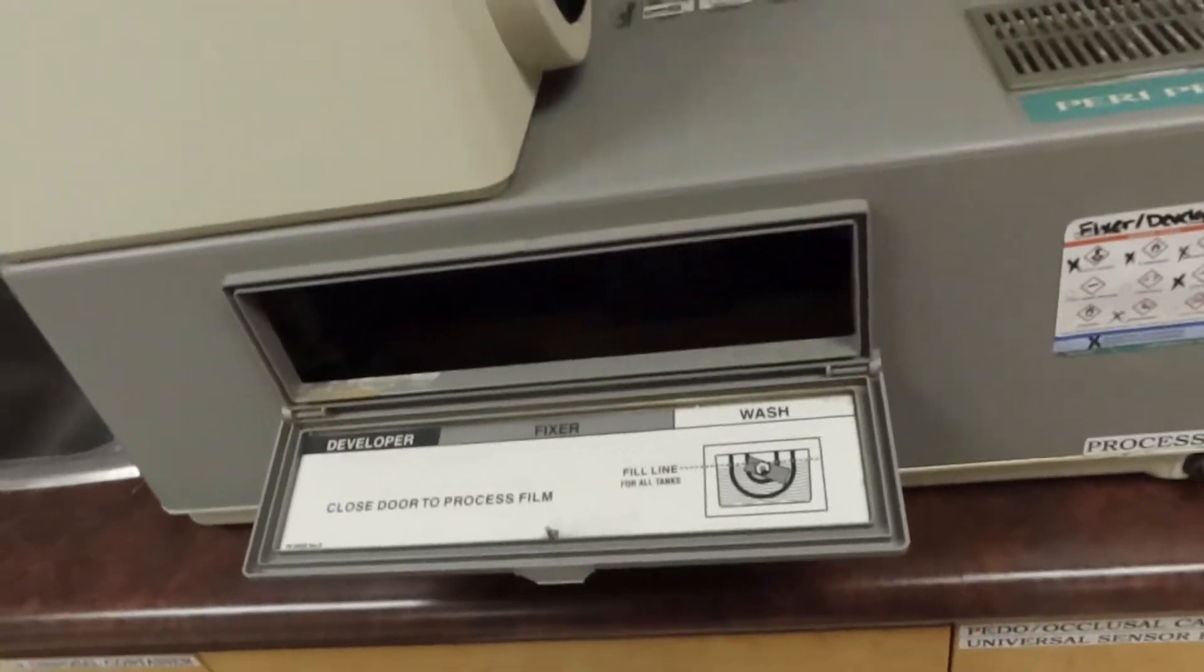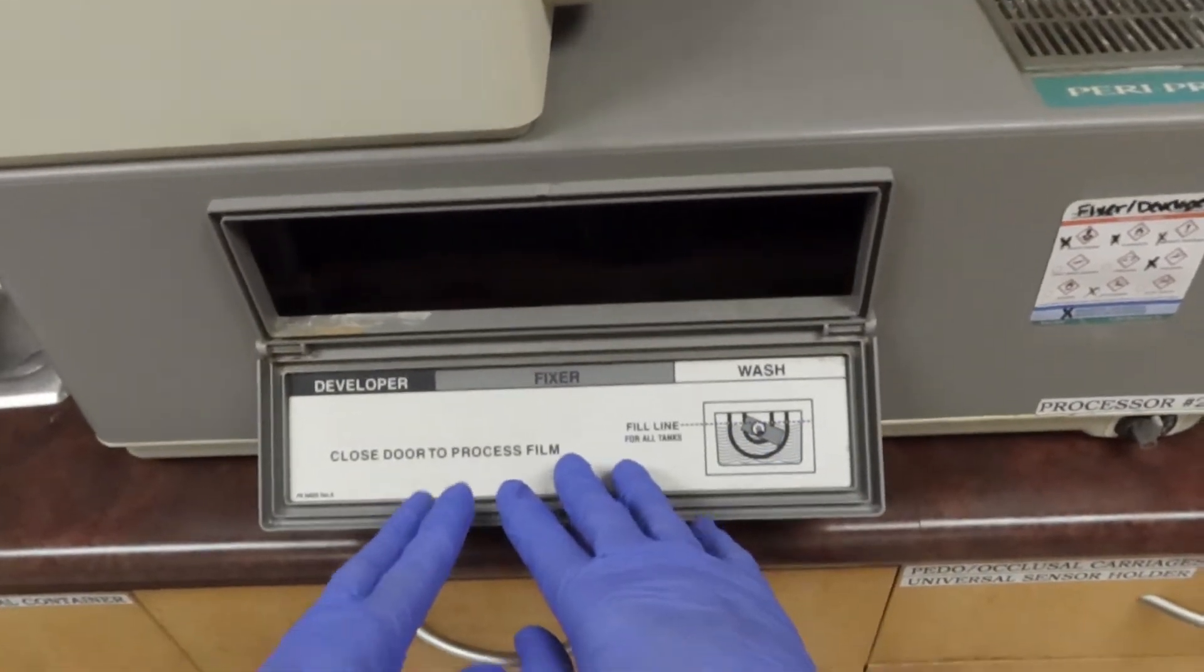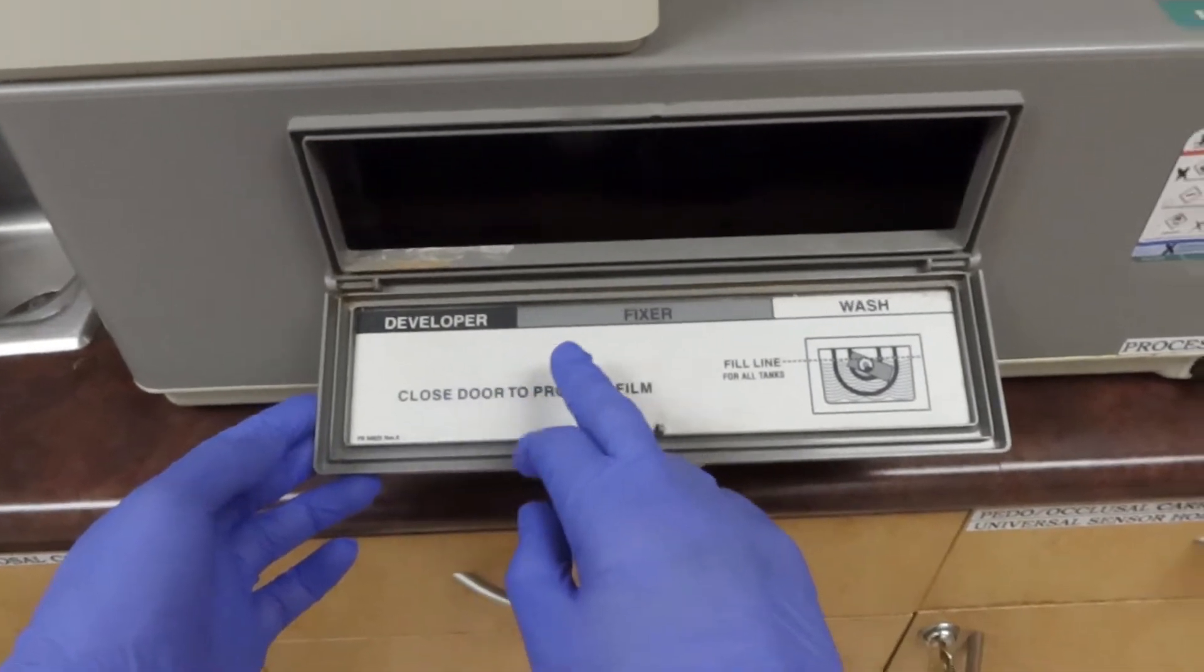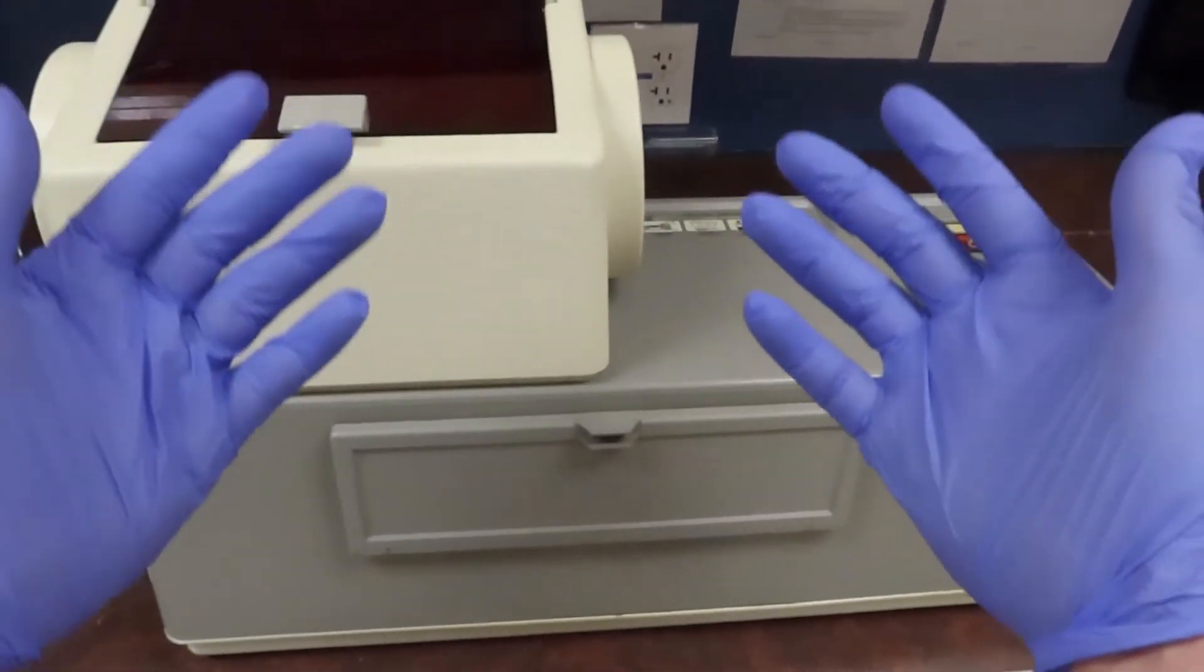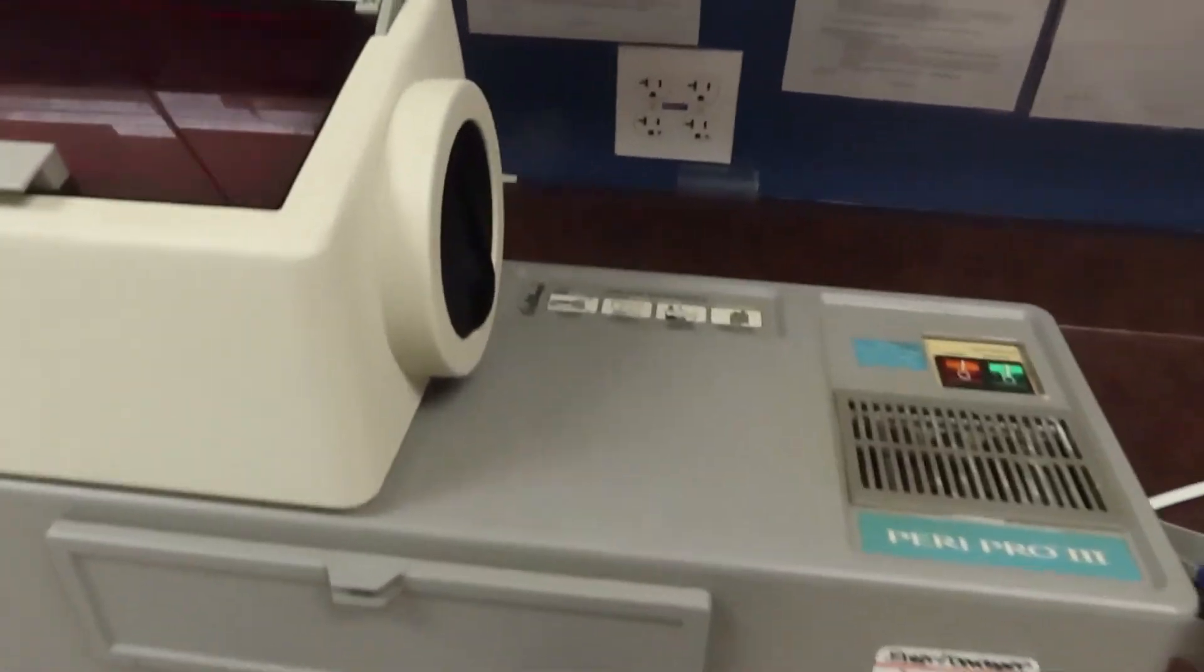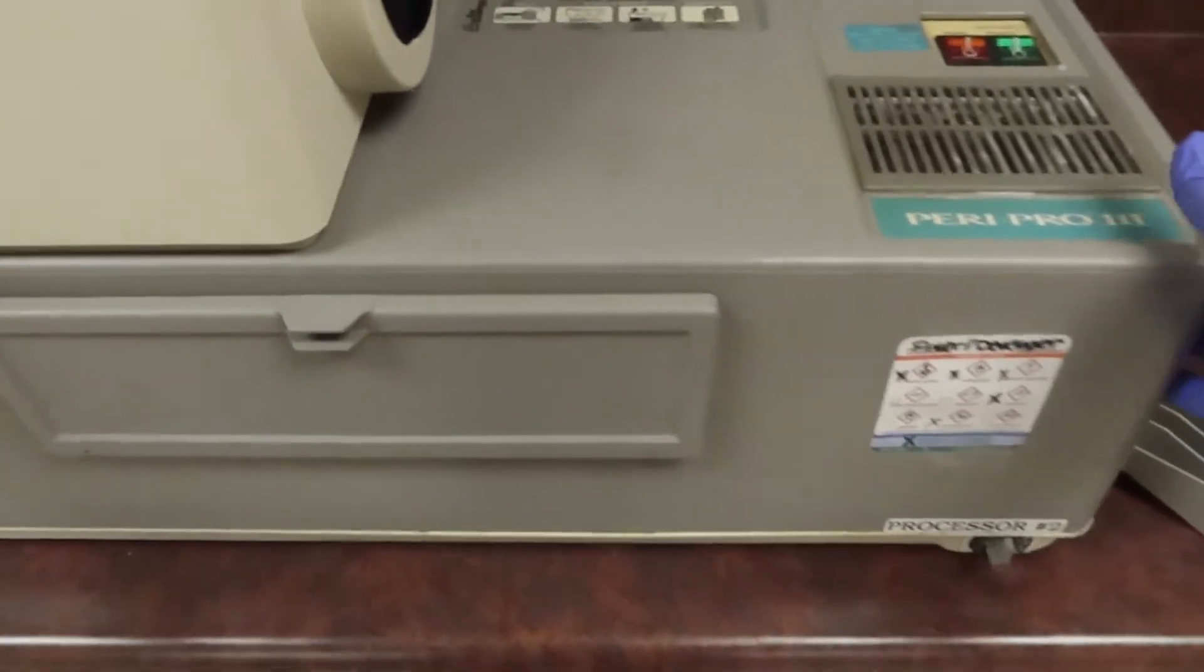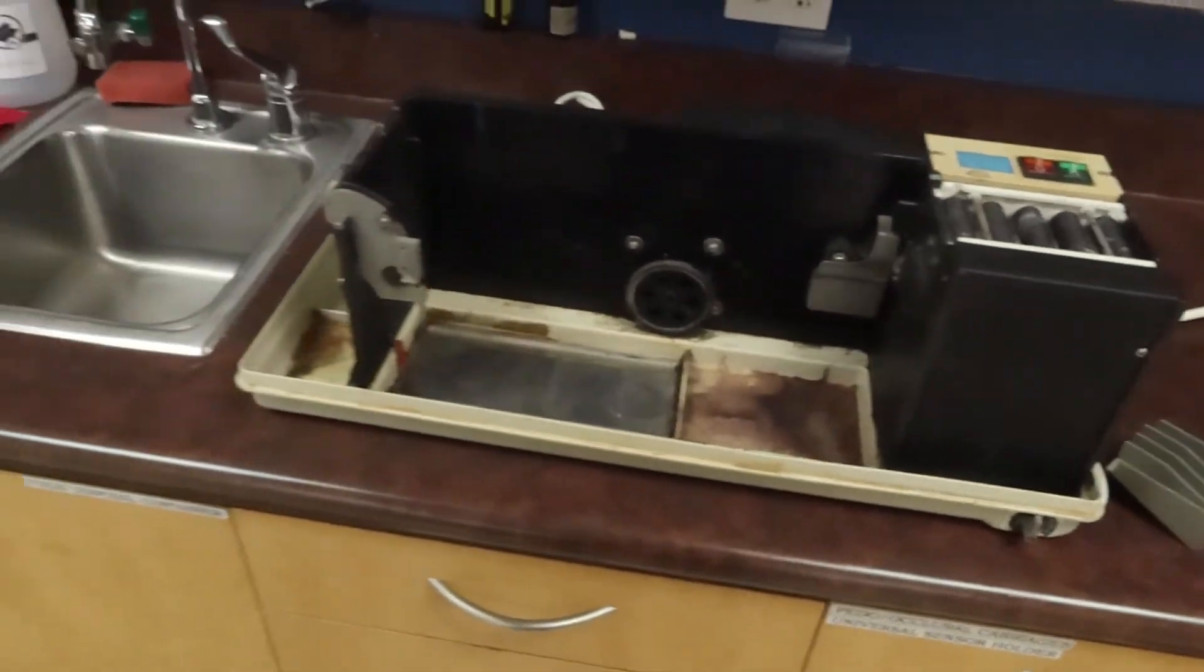Never mind, thought there was a monster in there. If we look in here, we're gonna see that we have different sections: developer, fixer, and wash station. If we go ahead and just open and take this whole bit off, we can see the actual guts to this.